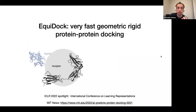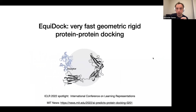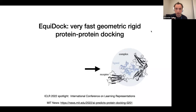Let me now describe our first model, called EquiDock, which offers very fast geometric rigid protein-protein docking. I'll also show how we can adapt this solution with small modifications to do drug-target binding, where the drug is flexible. In this talk, the proteins are rigid on the backbone, but we have some notion of how to represent side chains. In the first case, both proteins are rigid; in the second case, the drug is flexible but the protein remains rigid.